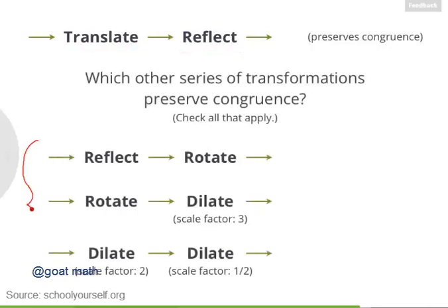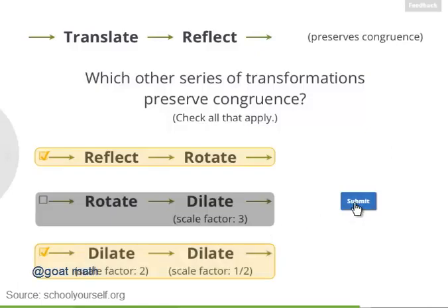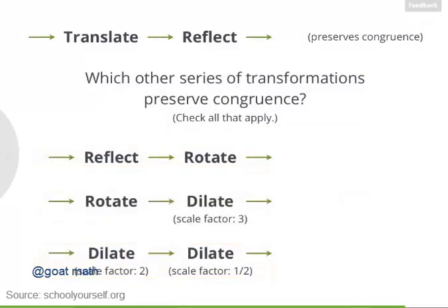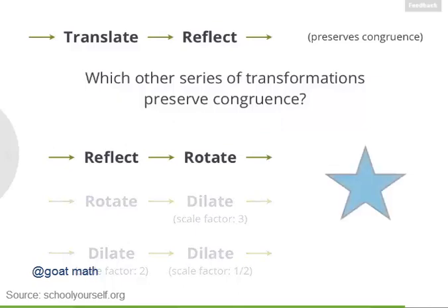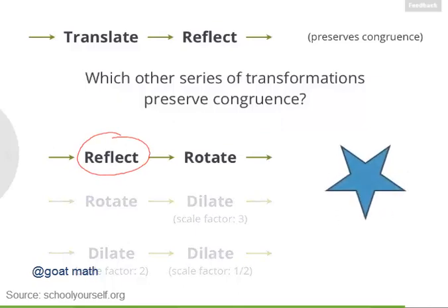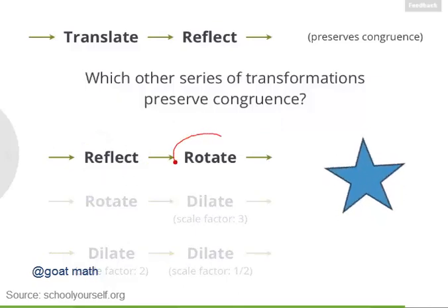So next, take a careful look at these pairs of transformations down here. Which of these will also preserve the congruence of any shape? Let's take a quick look at these one at a time. Suppose we have a star. If we reflect it, and then rotate it, the resulting shape is still congruent to the original.